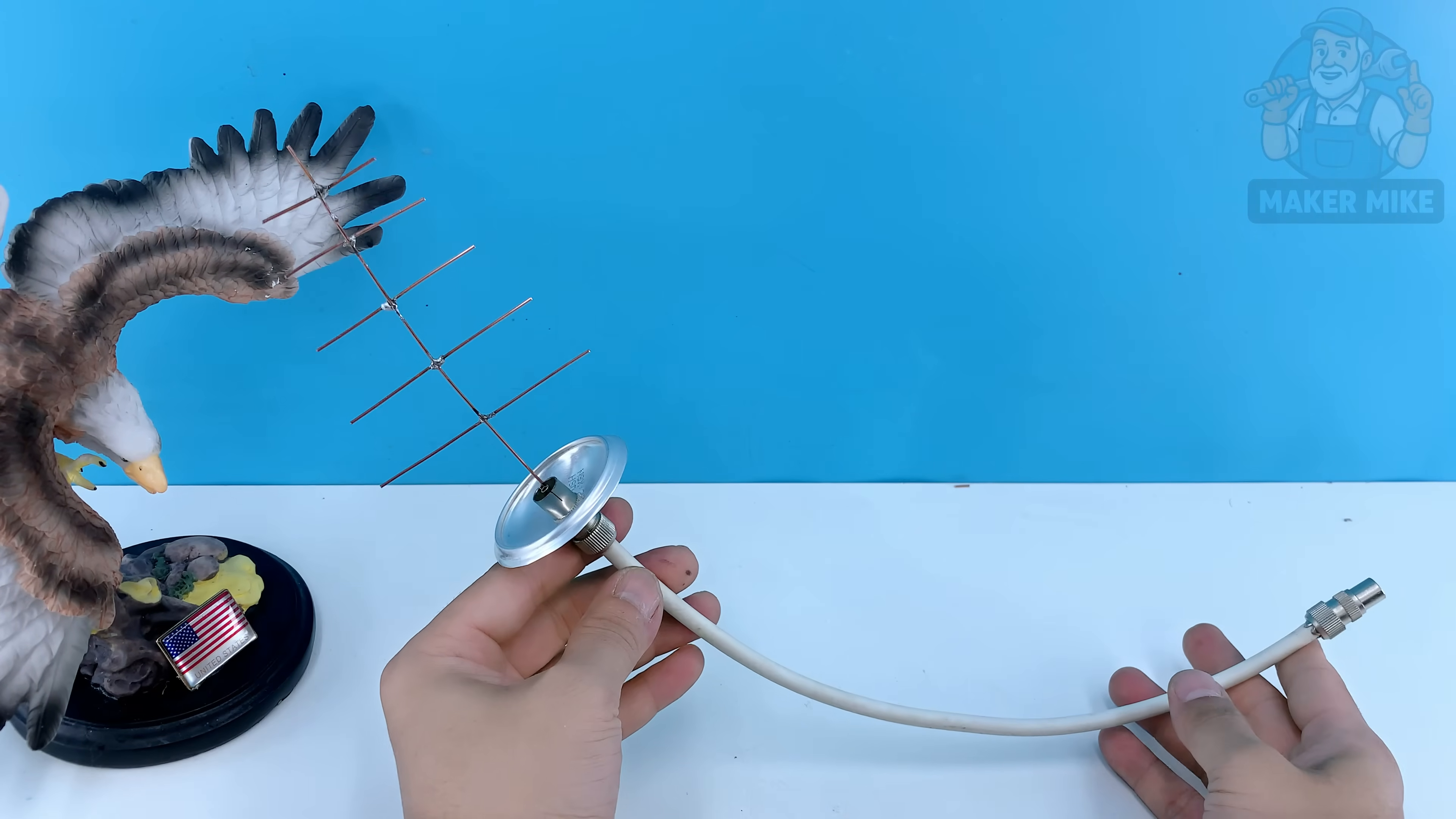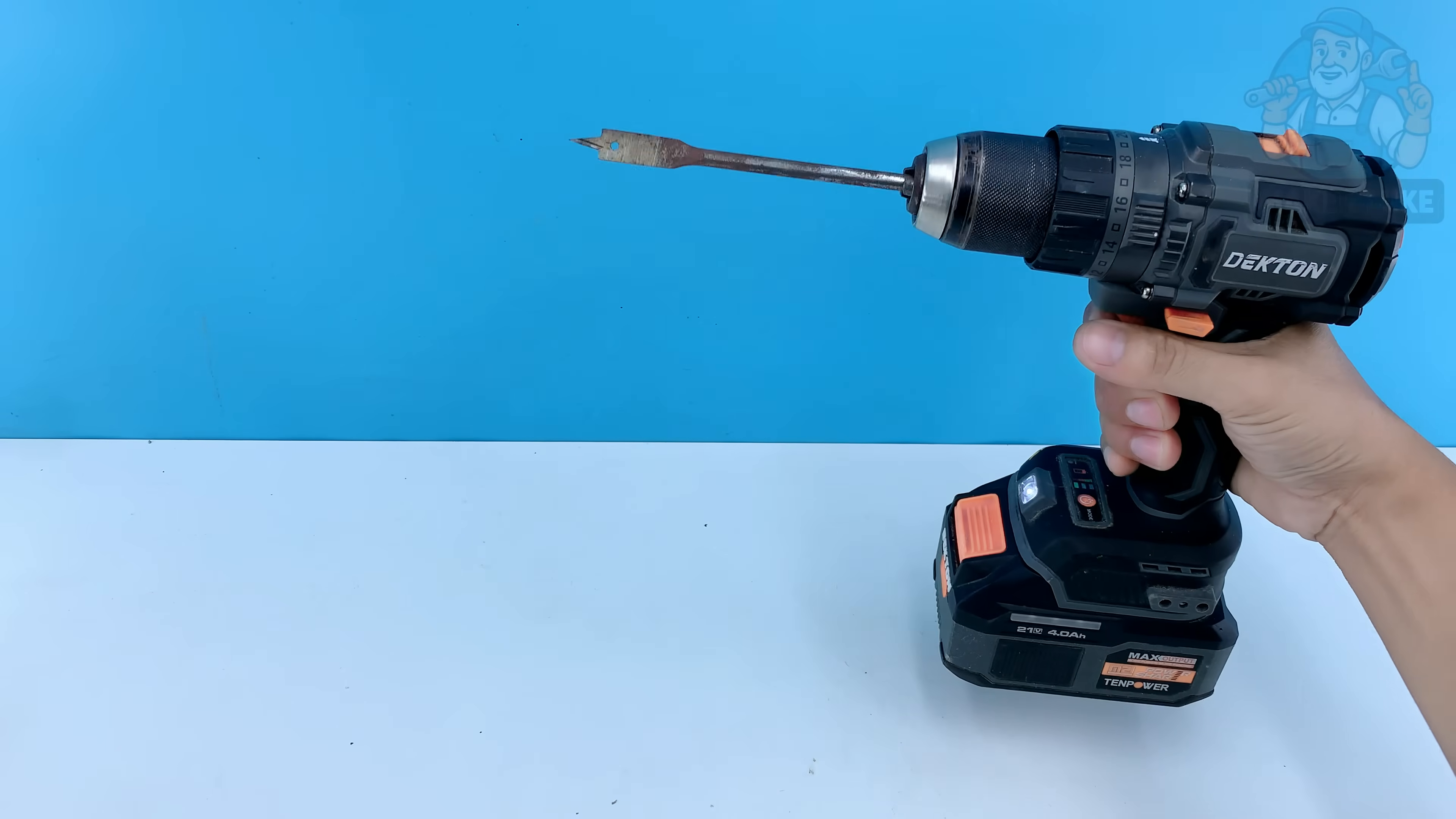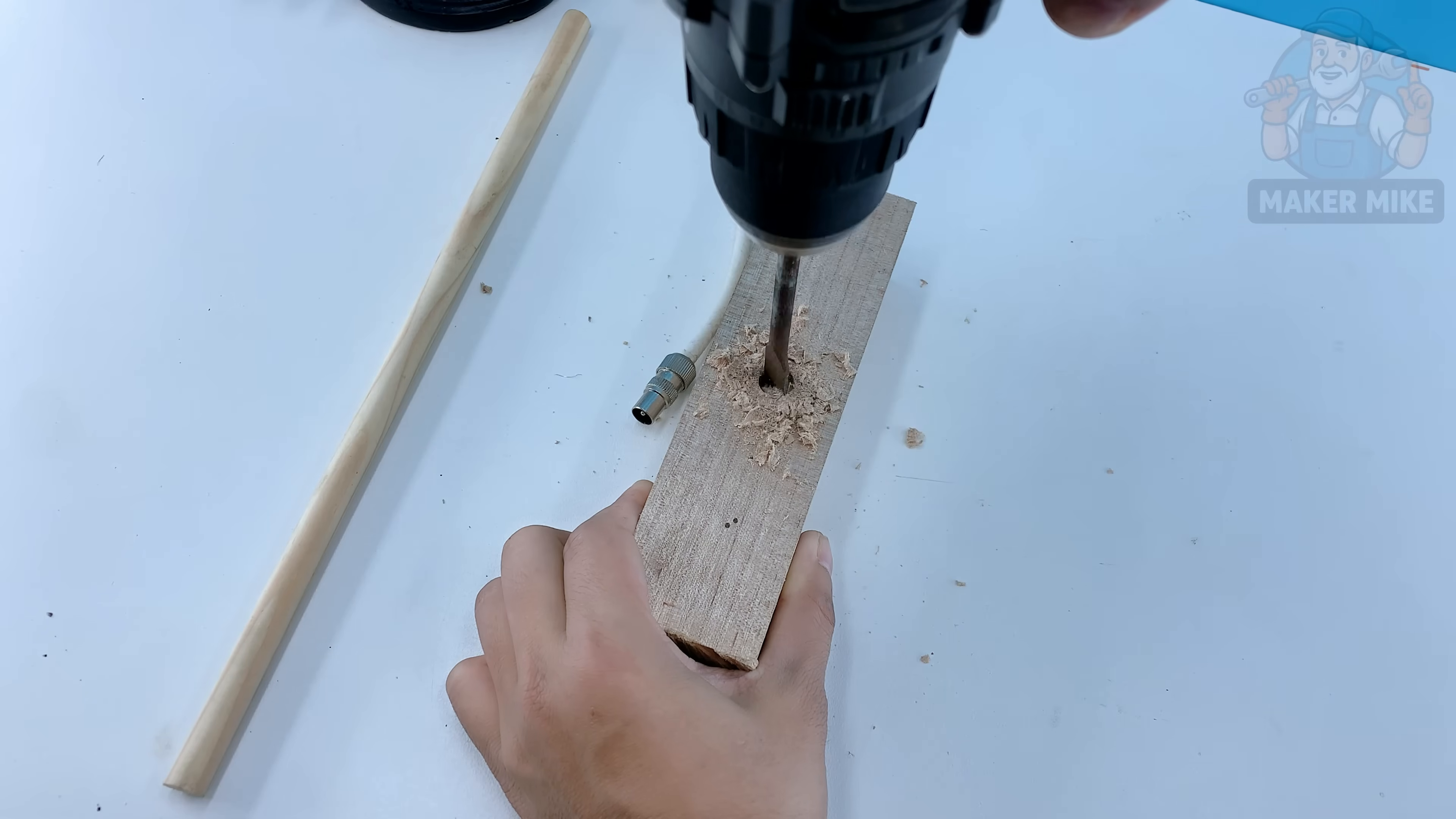Every good antenna needs a solid base something sturdy to keep it upright and steady. Grab a small rectangular piece of wood. This will be your base. Then take a round wooden dowel or rod and drill a hole in the center of the base just deep enough for it to stand firmly. A little wood glue or a drop of super glue will help keep it locked in place. Once the dowel is secure, use a bit of tape or a zip tie to fasten your homemade antenna the can and wire setup to the top of the rod. Adjust the angle slightly until it stands straight and balanced.